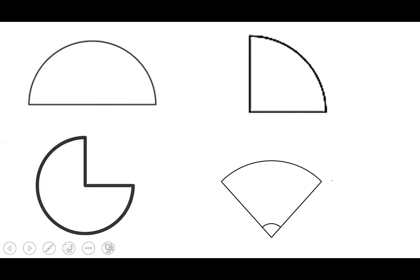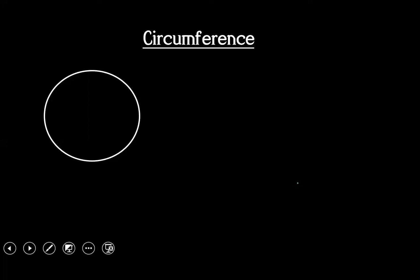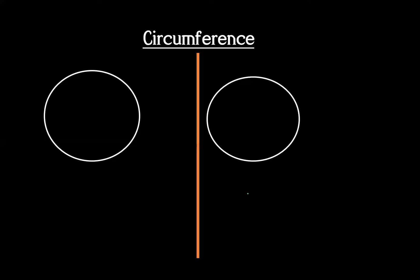We'll also cover the sector of a circle whose angle is not 90 degrees and not 180 degrees. After understanding circumference and how to find it, we will be able to find the perimeter of shapes like this. Circumference means the distance around the circle.